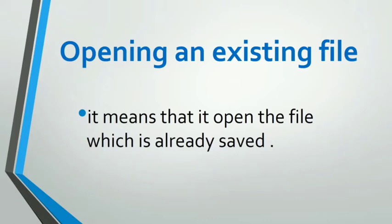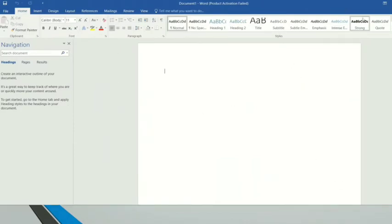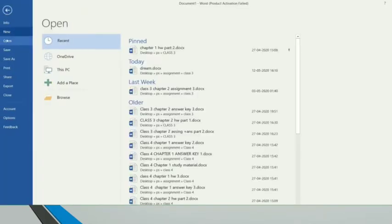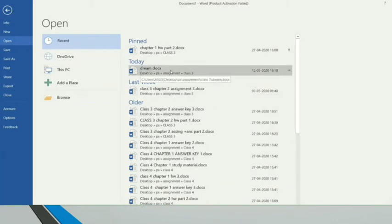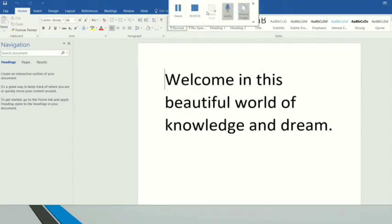After saving, we want to use the file next time, so how do we open an existing file? An existing file means the file which is already saved. Again with the help of video — same home tab, you can find the open option. After clicking on the open option, several files are here. You find your file and click on it. See — 'Welcome in this beautiful world of knowledge and dream' — the same word appeared. The same file is opened. This is the way you can easily open the file you have saved.